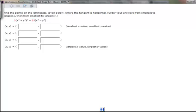In this problem, we're asked to find the points on the lemniscate where the tangent is horizontal.